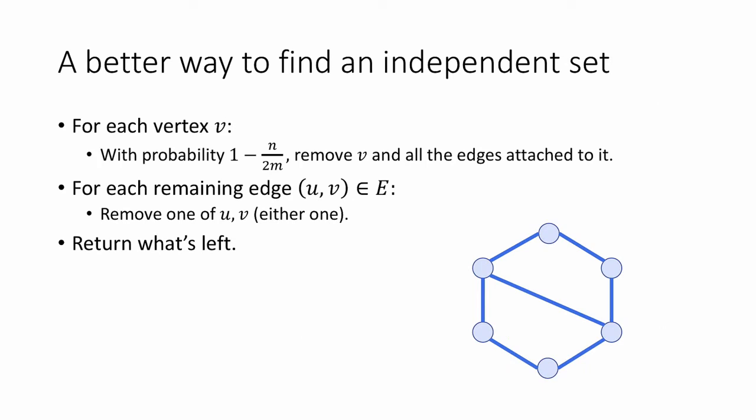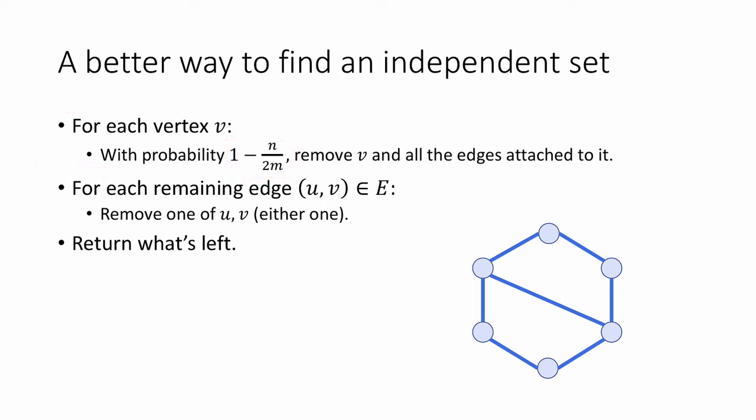We're going to use randomness to improve this procedure. The basic idea is that we'll first remove a bunch of edges from consideration using randomness, and then try the approach we just saw. More precisely, here's the algorithm: first, for every vertex v, we're going to remove v and all of the edges attached to it with probability 1 minus n over 2m. Once that's done, we're going to go through all of the edges and remove one of their endpoints arbitrarily, returning what's left.